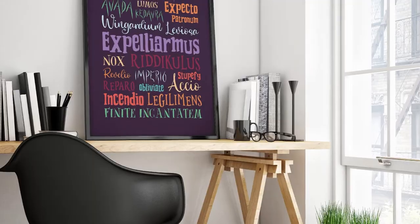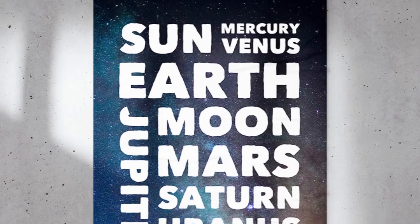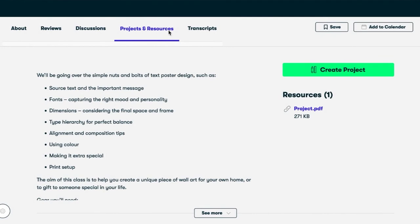As with every Skillshare class, there is a project for you to complete. I've designed the videos so that you can follow along and do a step in the project after each video. The project for this class is to create your own print-ready text poster and I'll be detailing the steps in the next video. So in the meantime, head across to the project area, download what you need and let's get started.